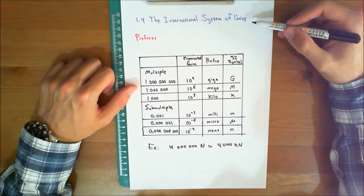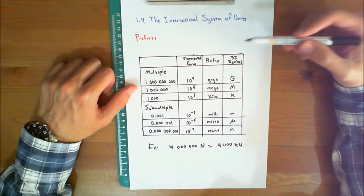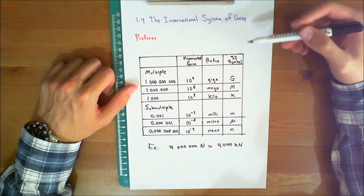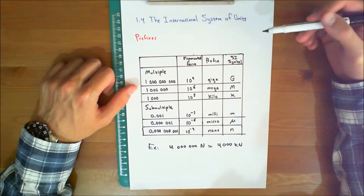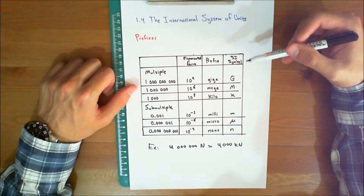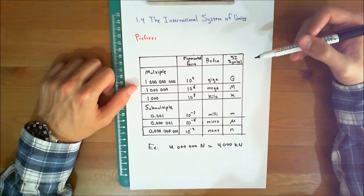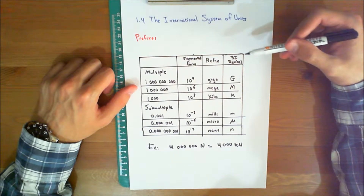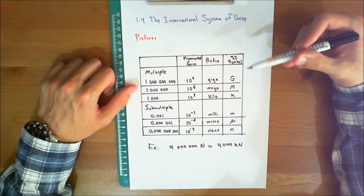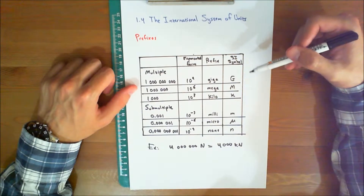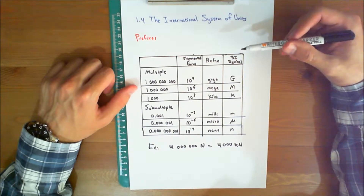The international system of units. The SI system of units is used extensively since it has become the world's standard for measurement. Consequently, the rules for its use and some of its terminology relevant to mechanics will now be presented.